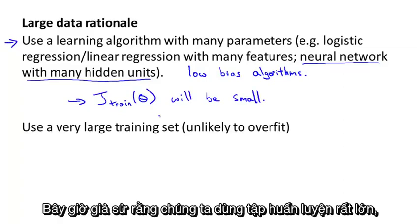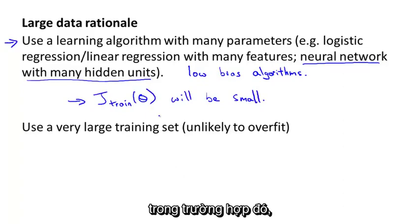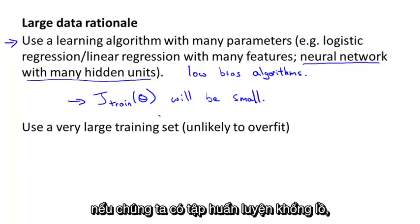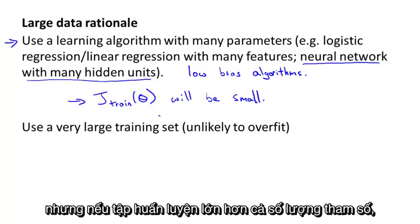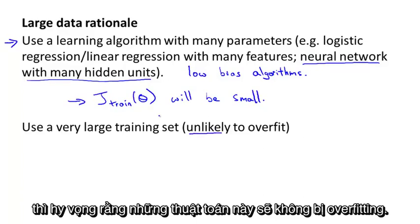Now, let's say we use a massive, massive training set. In that case, if we have a huge training set, then hopefully, even though we have a lot of parameters, but if the training set is sort of even much larger than the number of parameters, then hopefully these algorithms will be unlikely to overfit.